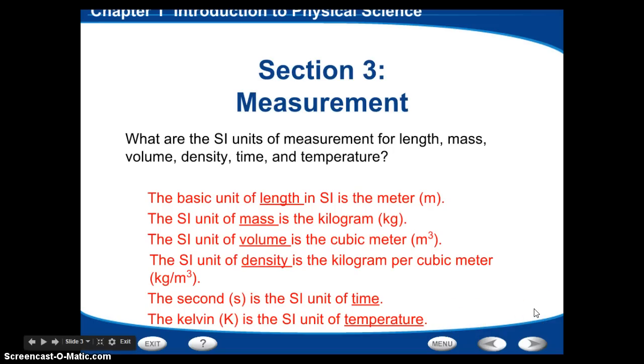So when we have the metric system, there are some base units. The basic unit for length is the meter. The SI or basic unit for mass is kilogram. The SI unit for volume is a cubic meter, which is the m with the little 3.